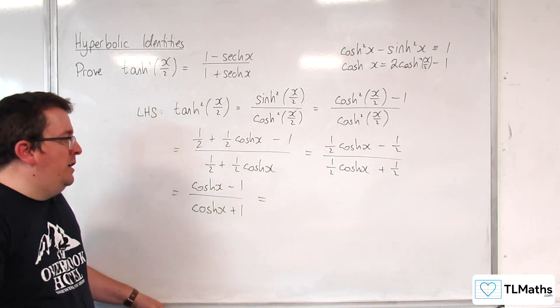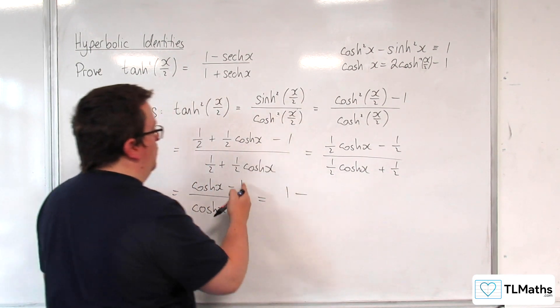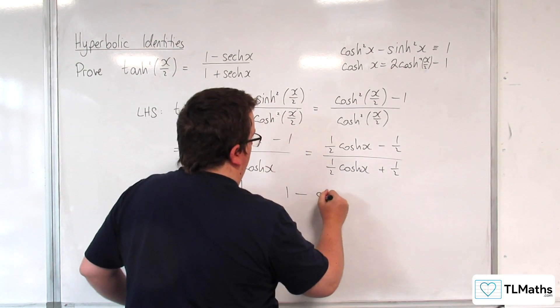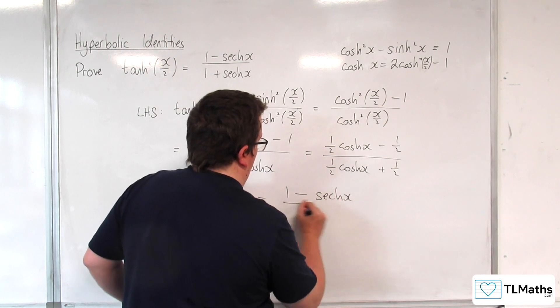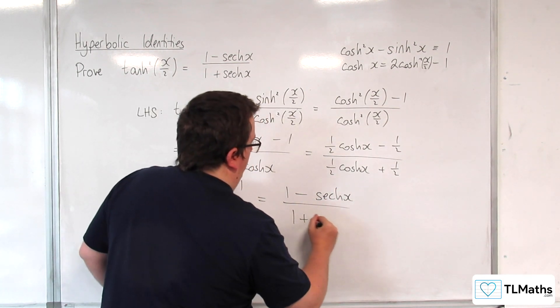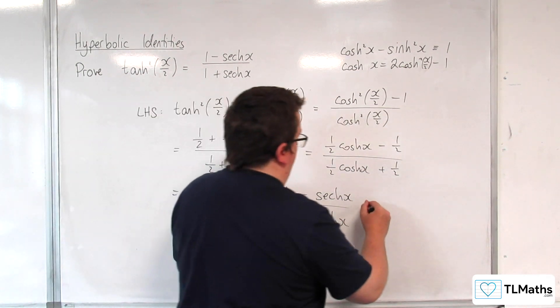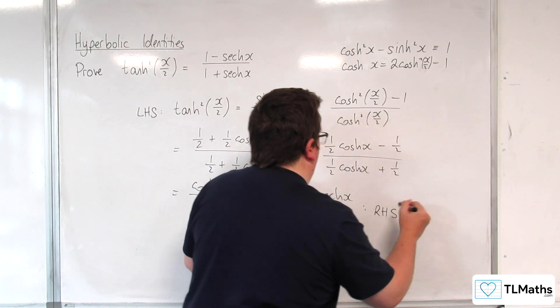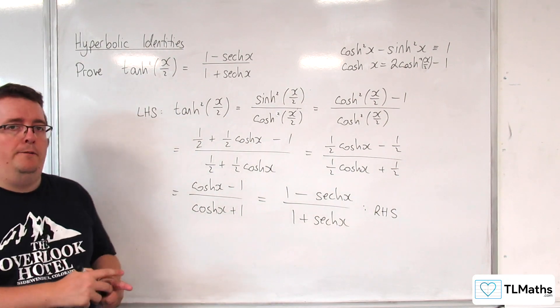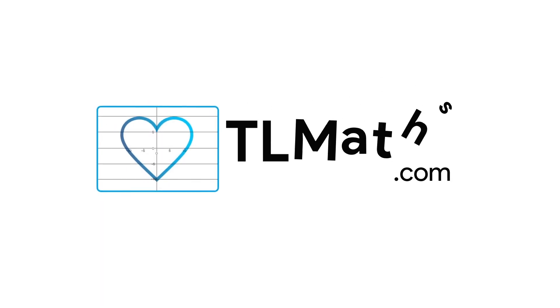So, 1 take away 1 over cosh is sech. And so, we get 1 plus sech x in the denominator. And that is my right-hand side.